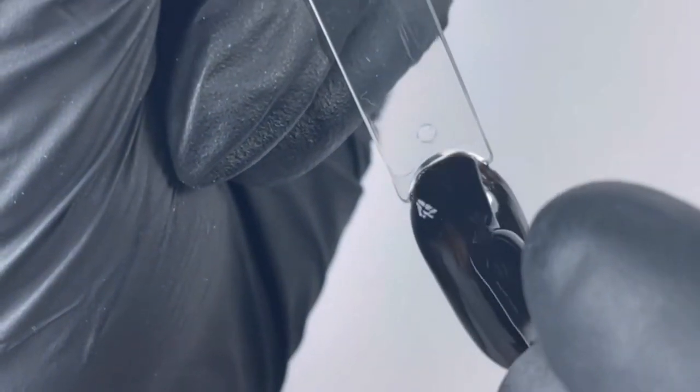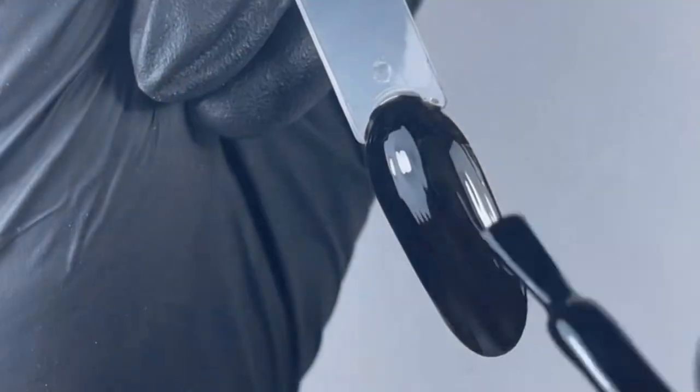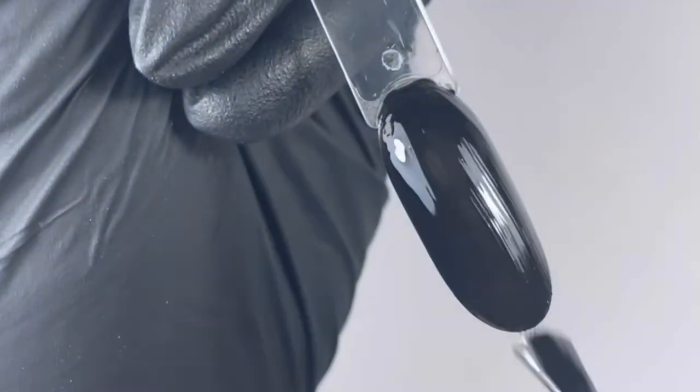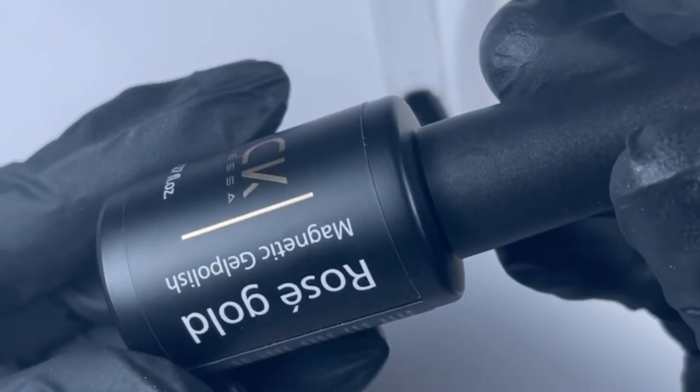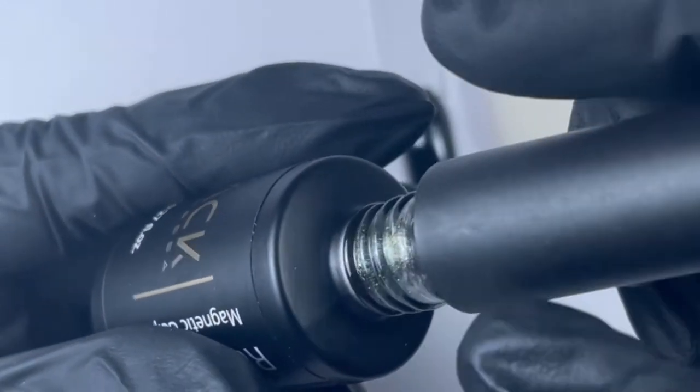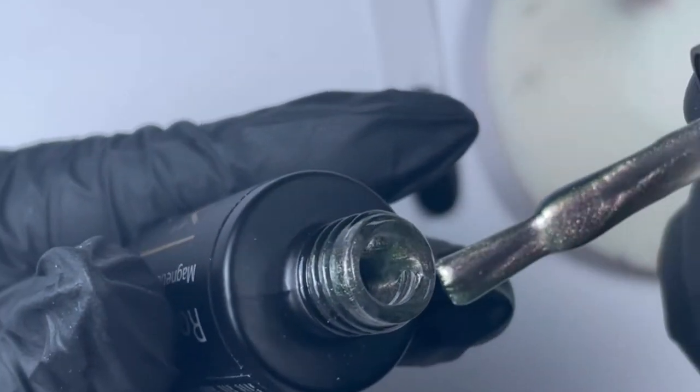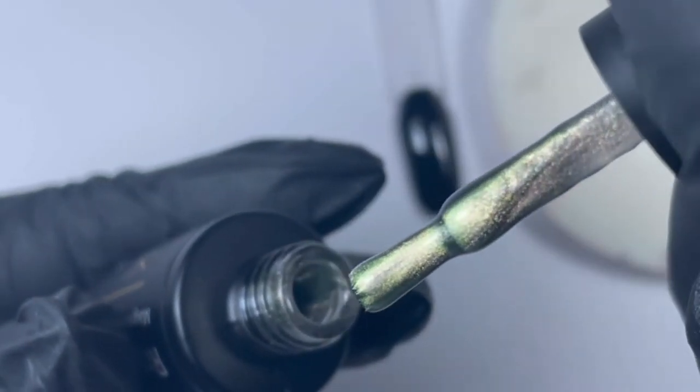For the cat eye effect, I am using the rose gold from Black by Vanessa. This one is magnetic gel polish. I am loving the color.